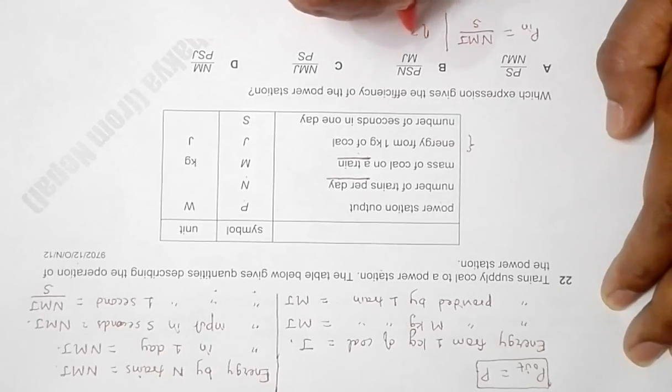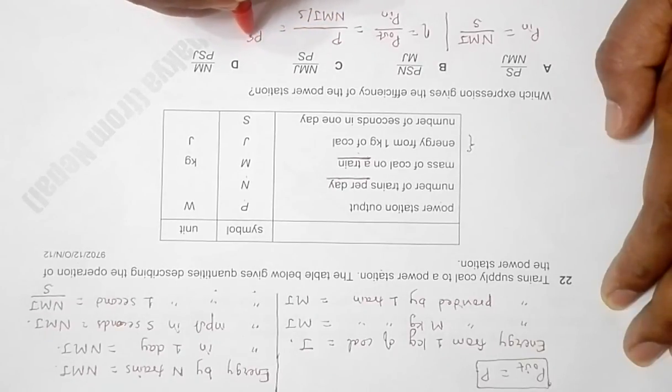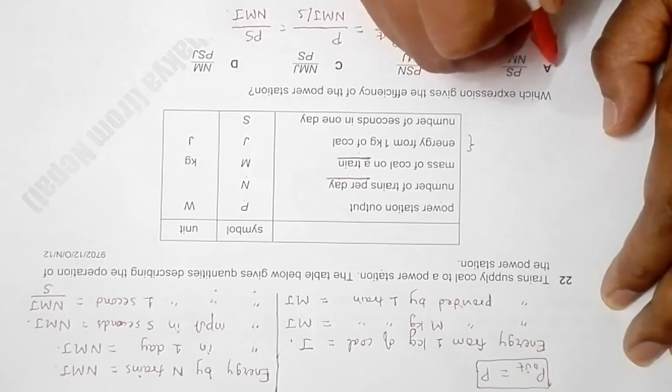Efficiency is equal to power output by power input. That's equal to simply P divided by nmJ by s, which will be equal to PS divided by nmJ. So this answer is available in choice number A, so choice A should be the correct answer.